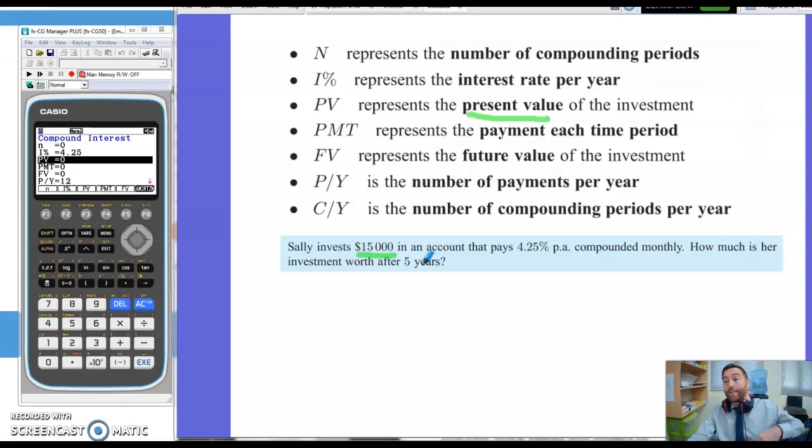However, she's got rid of that, so we put that in as minus $15,000 because at the moment she doesn't have that $15,000. She's minus that money from her pocket and put it in the bank. So minus $15,000 is what she starts with, and then we're doing monthly compounding. So just make sure we've got that payments per year and compounding periods at 12.